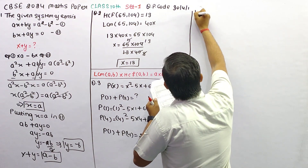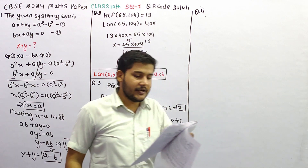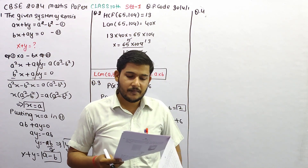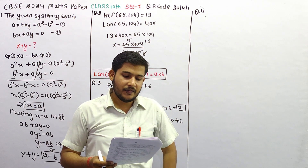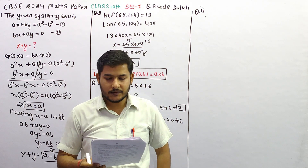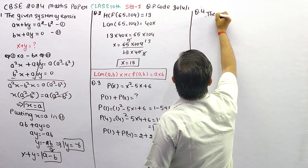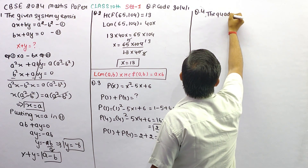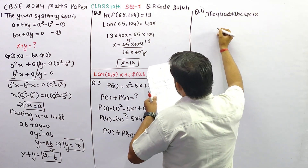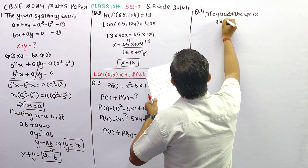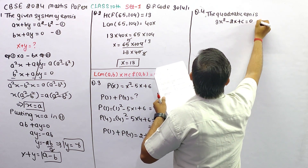Question 4: If the discriminant of the quadratic equation 3x² minus 2x plus c is equal to 0 is 16, then the value of c is? The quadratic equation is 3x² minus 2x plus c is equal to 0.